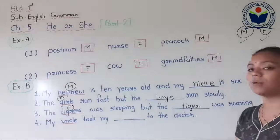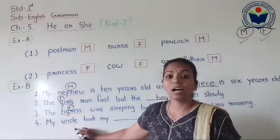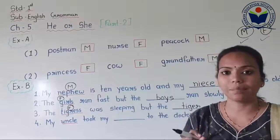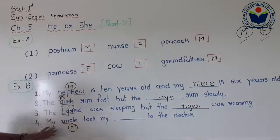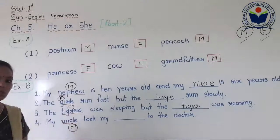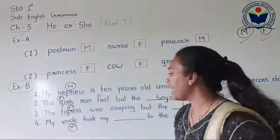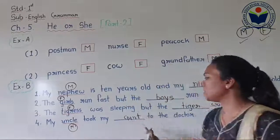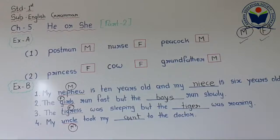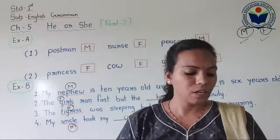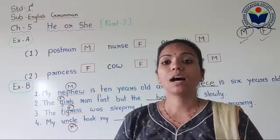Number four: 'My uncle took my blank to the doctor.' Uncle is a male naming word, so we have to write its opposite — aunt — A-U-N-T. The complete sentence: 'My uncle took my aunt to the doctor.' We have completed four blanks. Numbers five and six you have to write as homework. Practice in your grammar book.